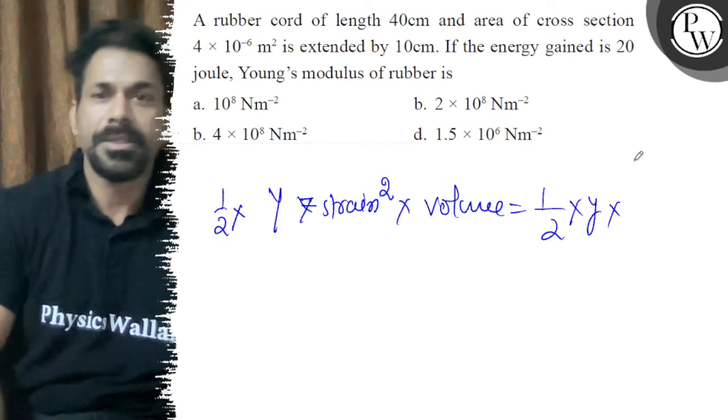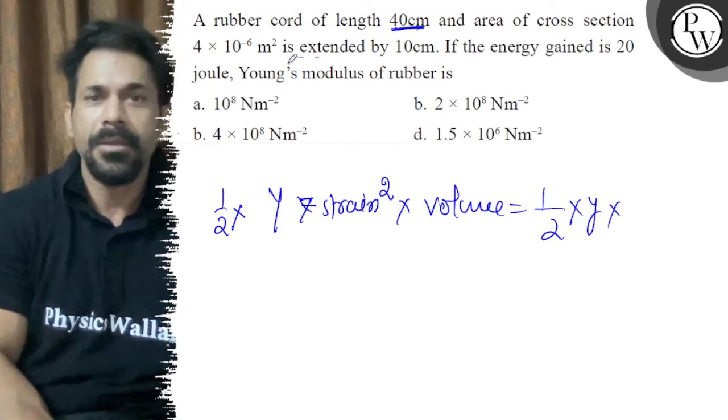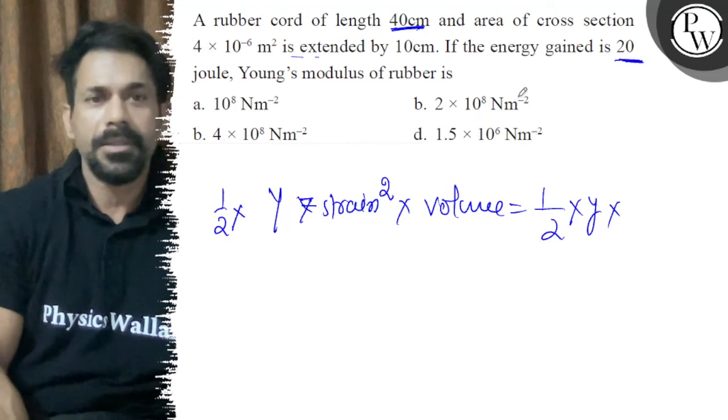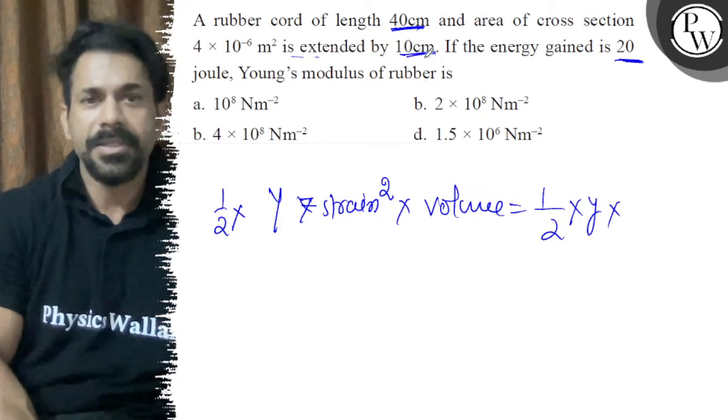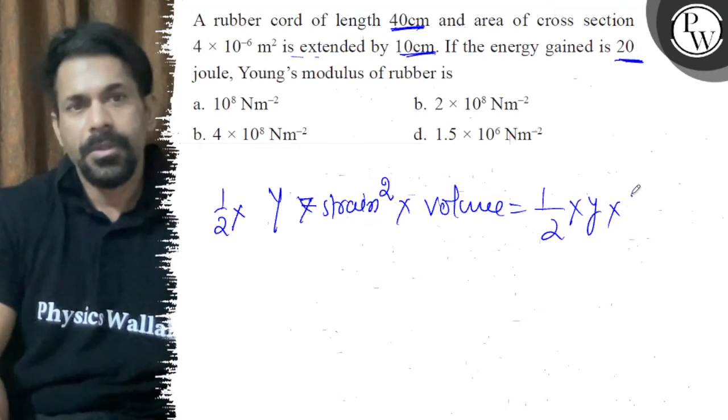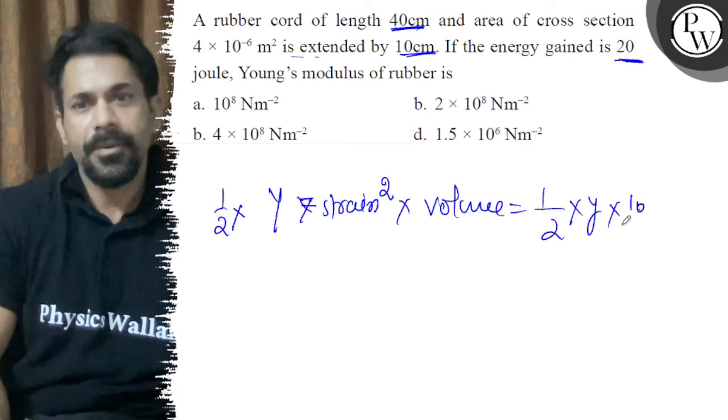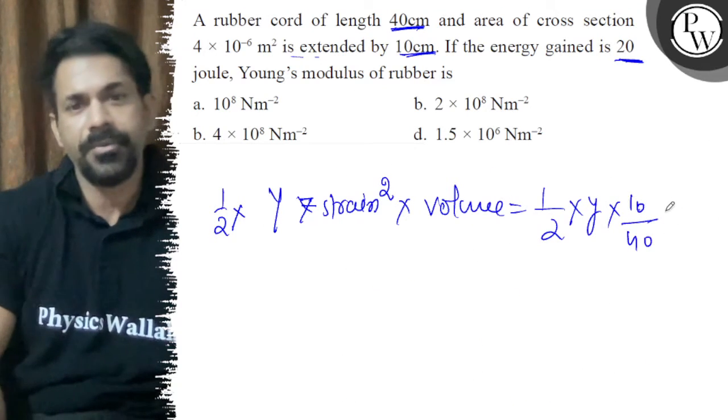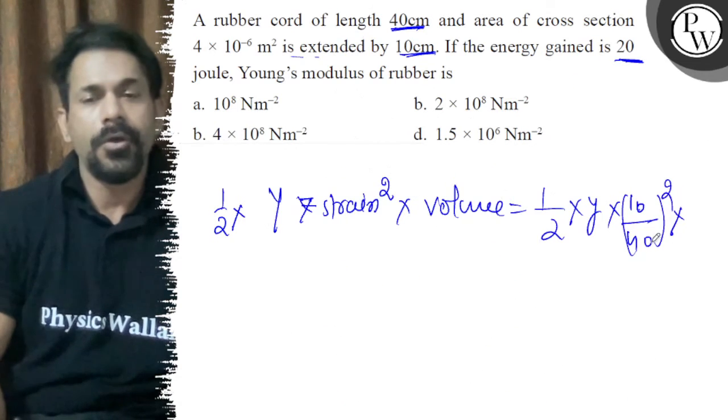So y into strain is 40 centimeter and 20 joule gained is 10 centimeter. So 10 centimeter on 40 centimeter, this strain is square into volume.